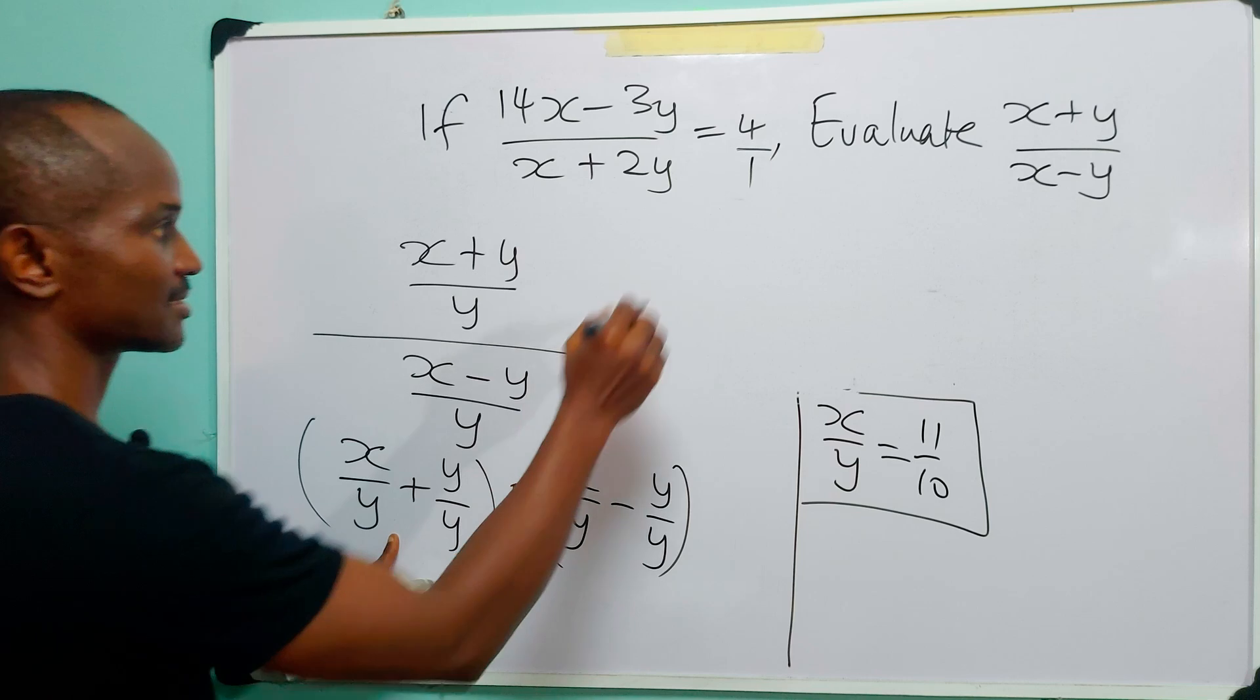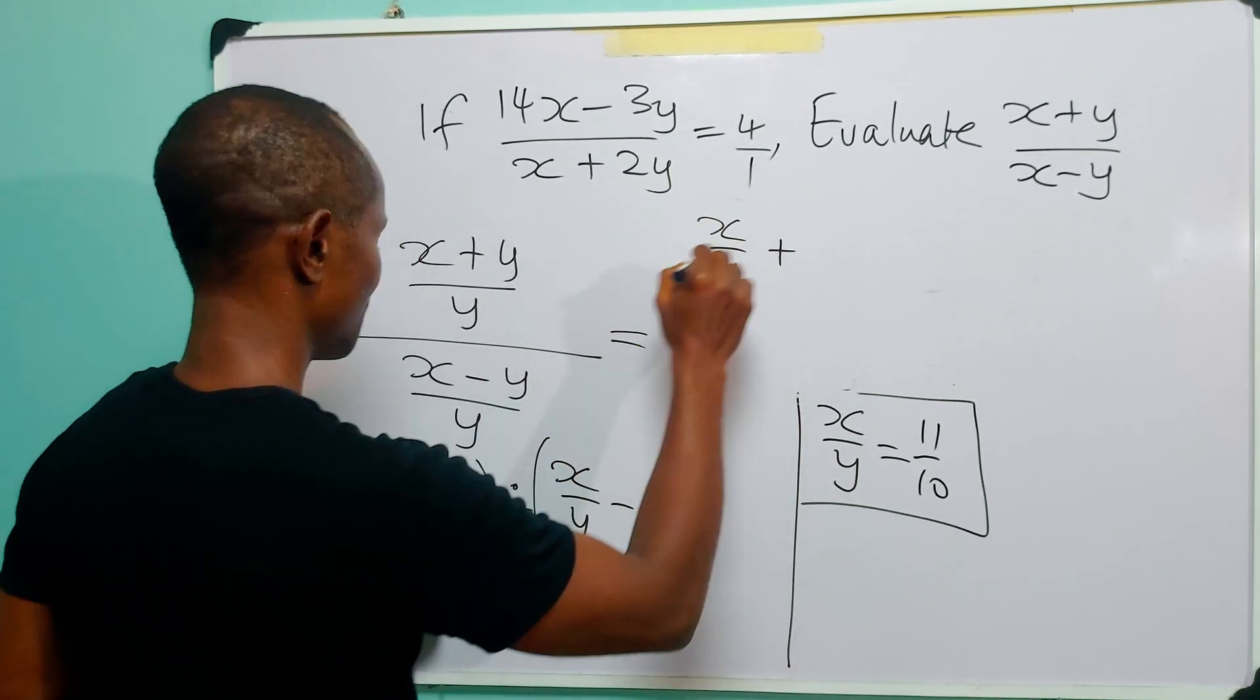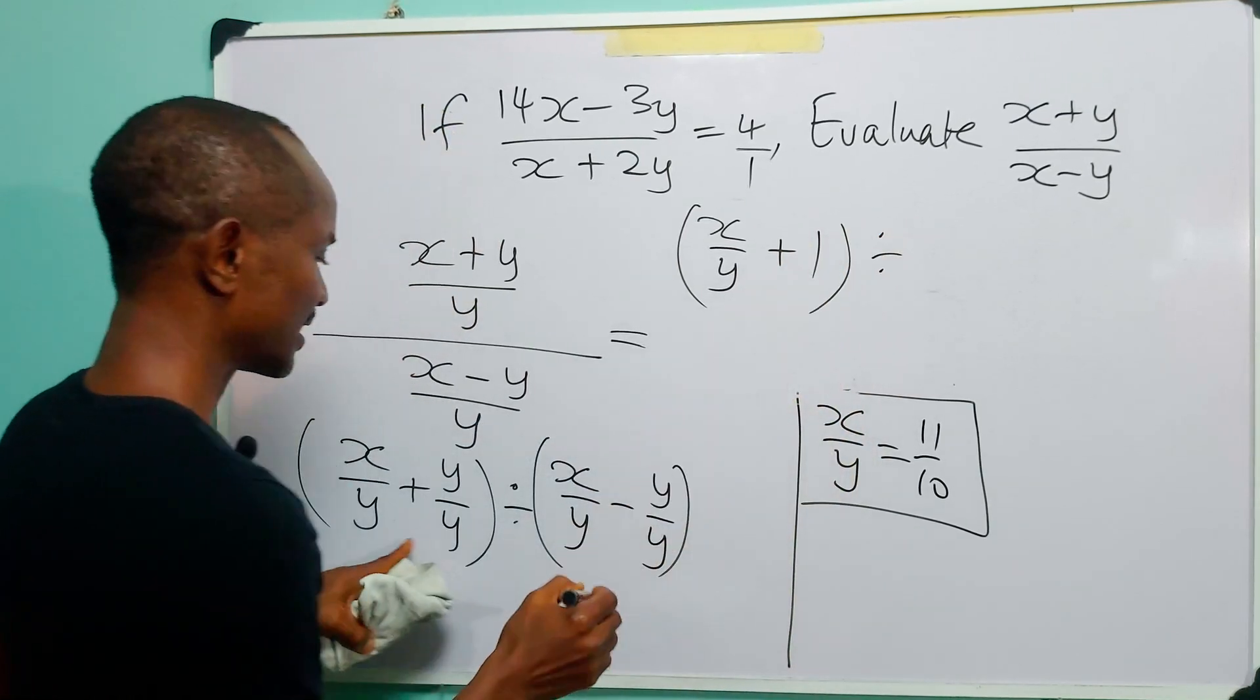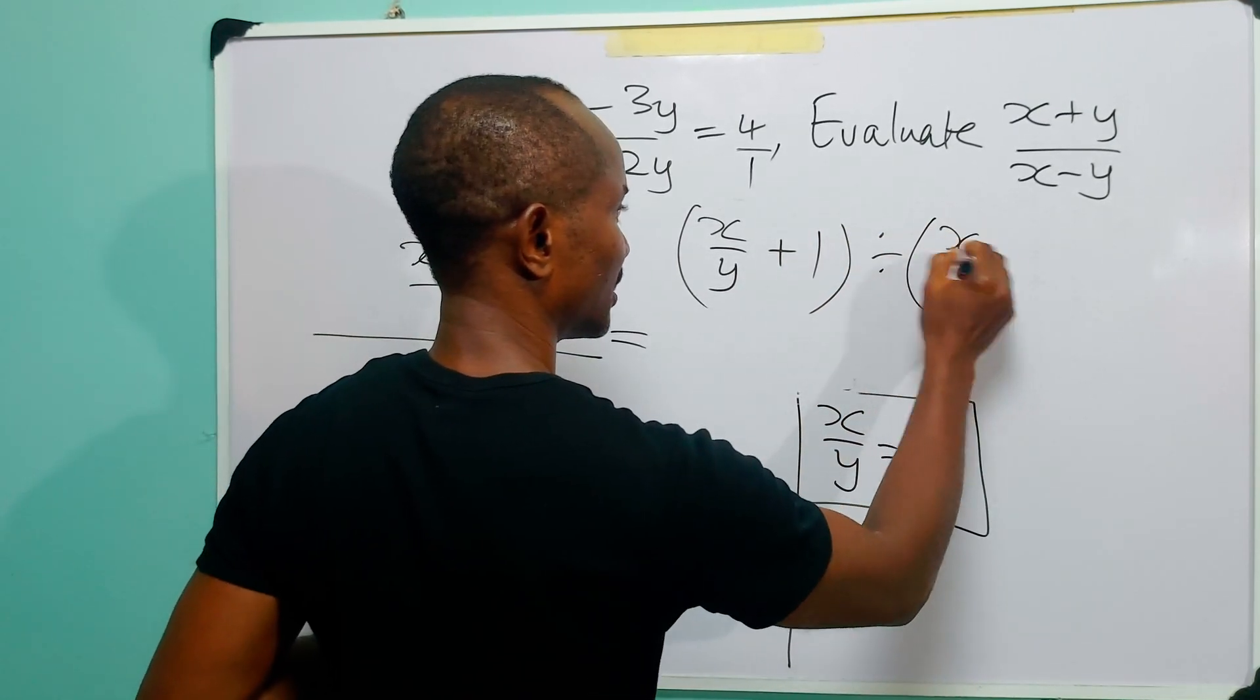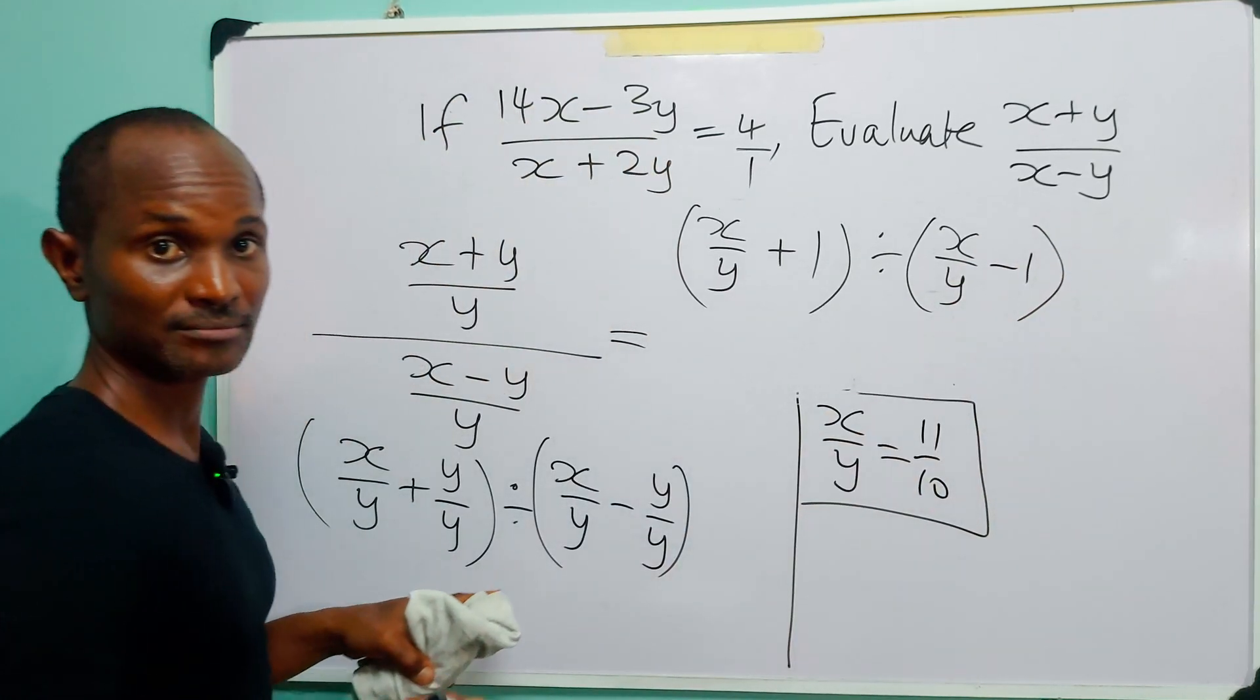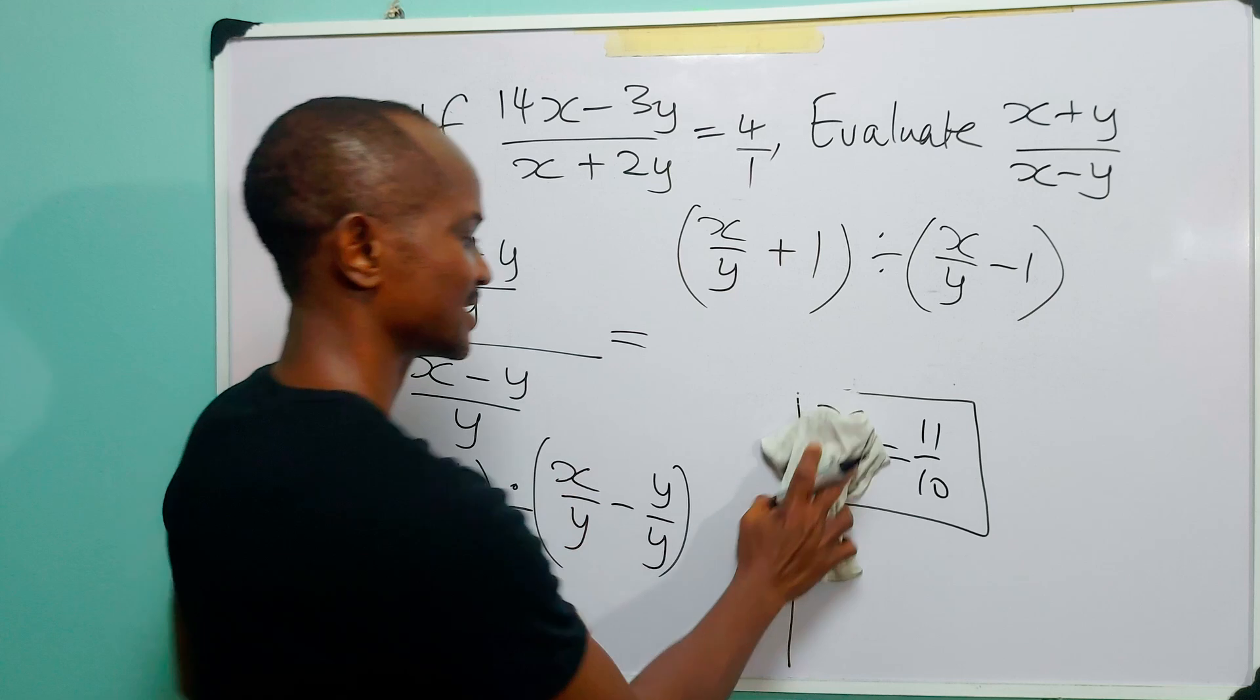From here we get (x/y + 1) divided by (x/y - 1). And of course we know that x/y is 11/10.